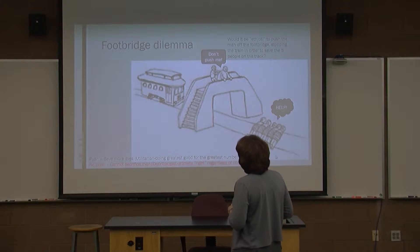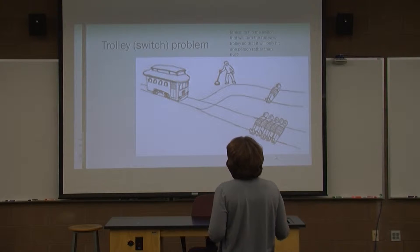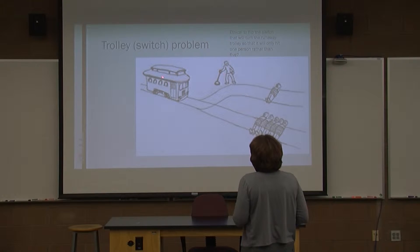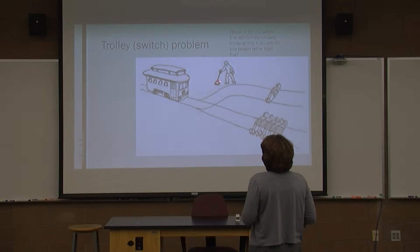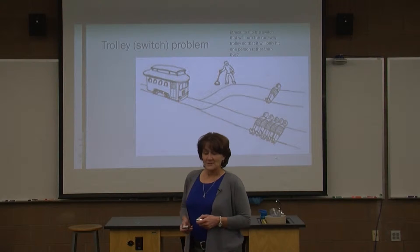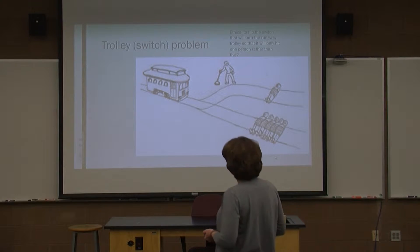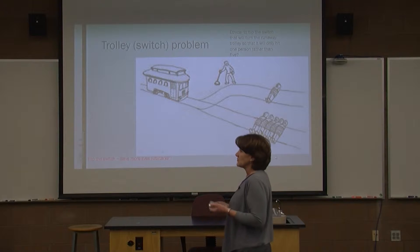Most people shown this diagram would choose the second option — not to push the guy off the bridge. The second scenario is the trolley switch, sort of the same thing. Here you are, the trolley is a runaway trolley coming down the tracks set to run over these people. Would you flip the switch and cause the trolley to veer off and only run over one person? Most people would choose to flip the switch and save more lives — do the greatest good for the greatest number of people.